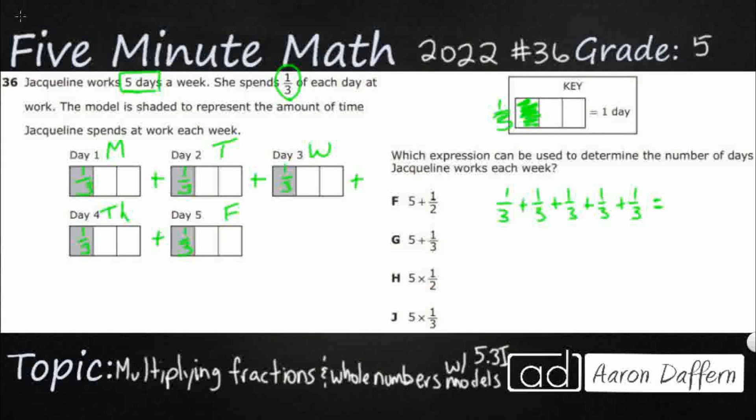When we add or subtract fractions, we need to make sure the denominator is the same. In this case, they're all thirds. Then you add the numerators only — you don't add the denominators. So I've got one-third, two-thirds, three-thirds, four-thirds — so I've got five-thirds. That's how many days she works.